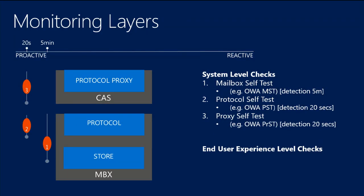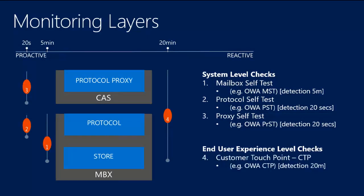If we're going to do a protocol proxy self-test, it only makes sense to do that at the Client Access Server role layer — again, something very lightweight that simply determines whether the protocol proxy can process a request. It's not dependent on Active Directory. It's not dependent on actually connecting to the mailbox server. Can we simply process a request? Yes or no — it's binary essentially. And then we have the end-to-end user experience, what we call a customer touch point. This executes from CAS and talks directly to a database, running the whole gamut of the protocol stacks through the proxy, through the protocol, down to the store. This executes every 20 minutes and is our safety net — if everything else fails, this will tell us that we have a problem.